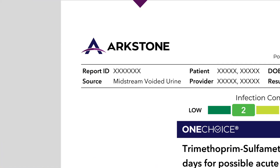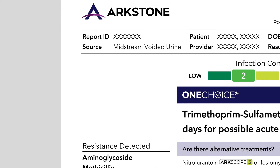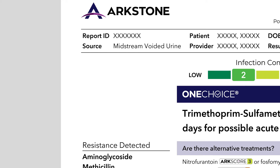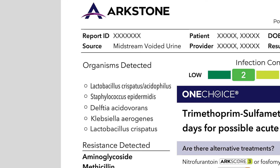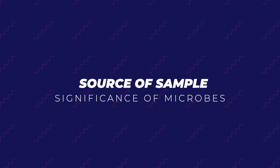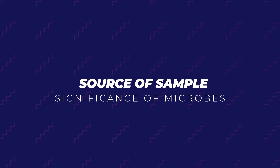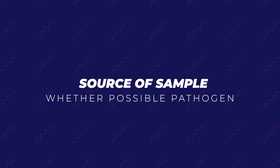On the left side of the report, we highlight and simplify the lab results, beginning with organisms detected. The organisms listed in bold are considered the likely pathogens, which OneChoice will target. Note that the source of the sample can affect the significance of particular microbes and whether they are considered a possible pathogen.